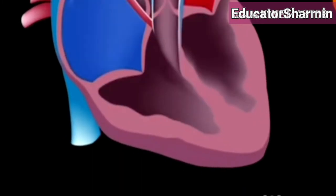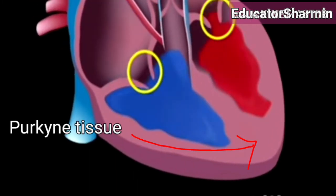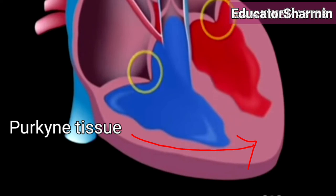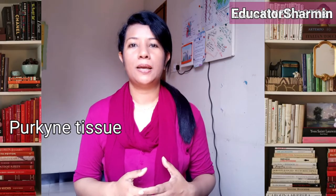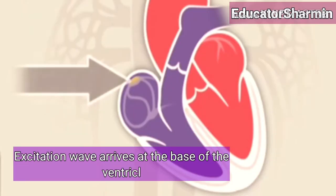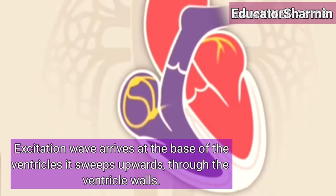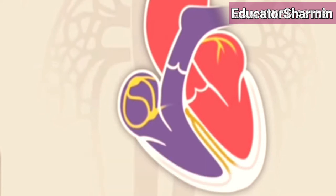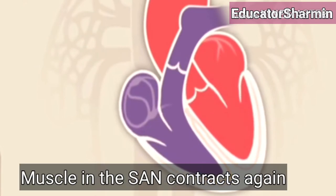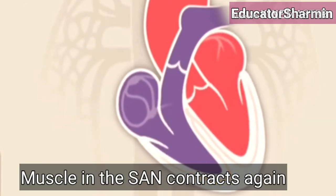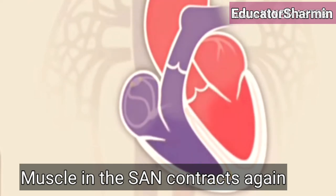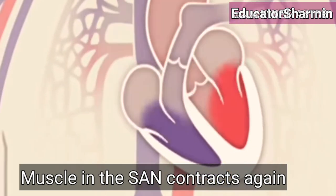The excitation wave then moves swiftly down through the septum of the heart along fibers known as Purkinje tissue. Once the excitation wave arrives at the base of the ventricle, it sweeps upward and through the ventricle walls. The ventricles then relax, the muscles in the SAN contract again, and the whole sequence runs through once more.